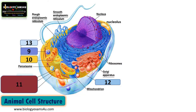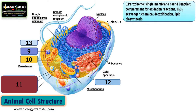The next structure is the peroxisome. Peroxisome is a single membrane-bound organelle and is a compartment for oxidation reactions. As a result of these oxidation reactions, H2O2 is synthesized, which is very toxic to the cell. This hydrogen peroxide is degraded by the catalase enzyme present inside the peroxisome. So it acts as a hydrogen peroxide scavenger. It is also a site of chemical detoxification and is involved in lipid biosynthesis.